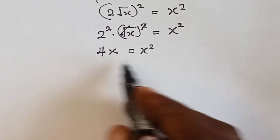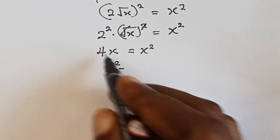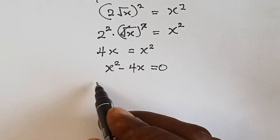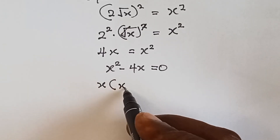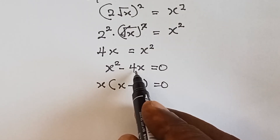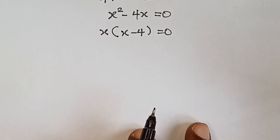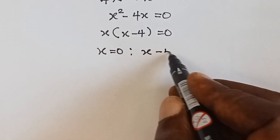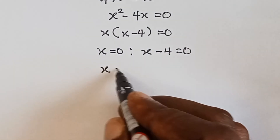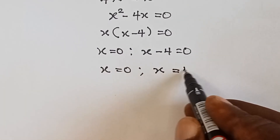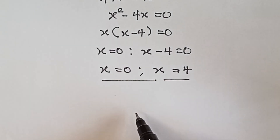This is a quadratic equation, so let's rearrange. We have x squared minus 4x equals 0. Factoring out x, we get x times (x minus 4) equals 0 — since x times x is x squared and x times minus 4 is minus 4x. That means x equals 0, or x minus 4 equals 0, which gives x equals 4. So x equals 0 or x equals 4.